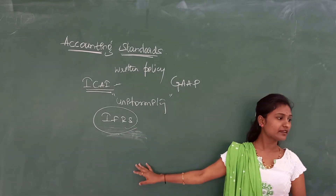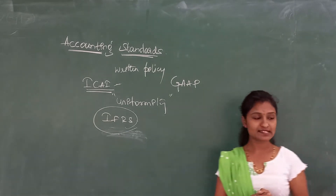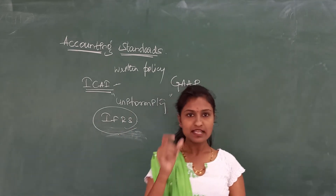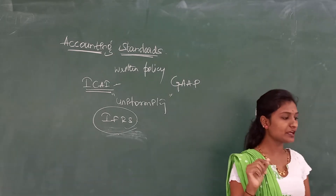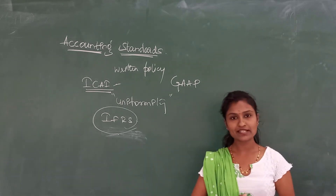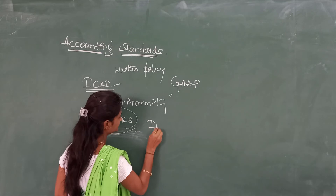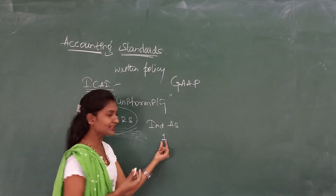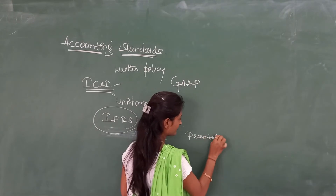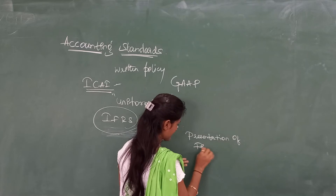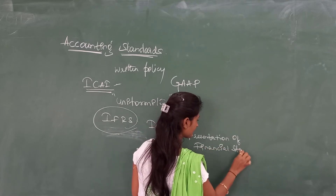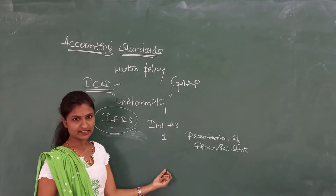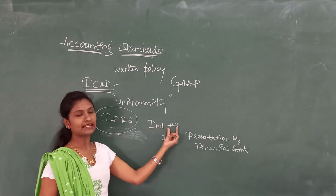Next we will move ahead. In the textbook is the Indian Accounting Standard — Ind AS 1 and Ind AS 2. In the textbook you can see these. Indian Accounting Standard 1 deals with presentation of financial statements. You can go through the Indian Accounting Standards in your book to get more detail.